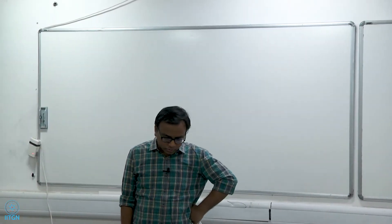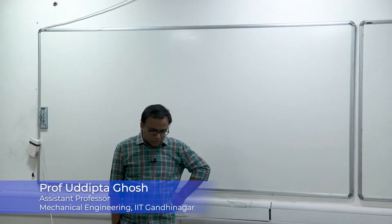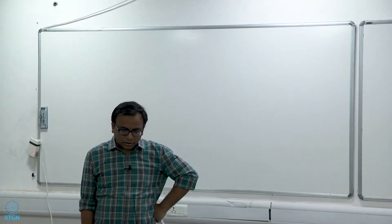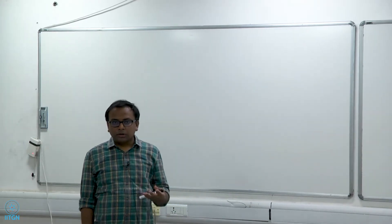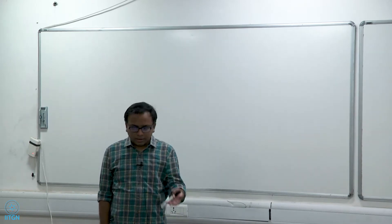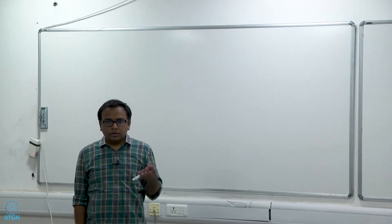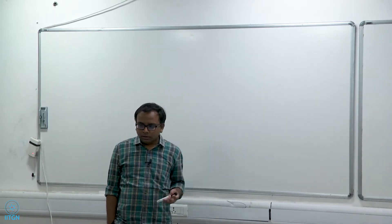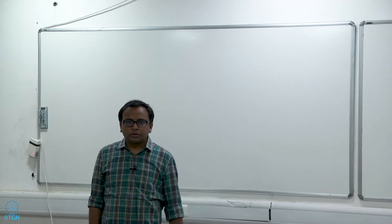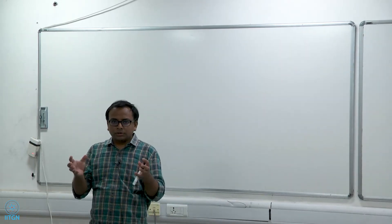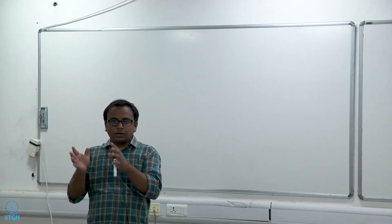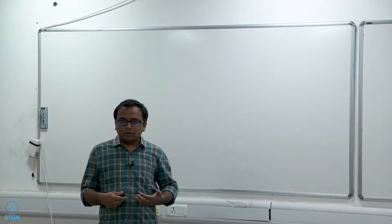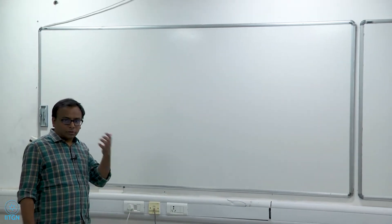Welcome back everybody to the thermodynamics course. We are back after a bit of absence. Before we left, Professor Bhargava had discussed in detail about how entropy changes for a closed system, and we will build upon that today. What we will do is look at what happens if we combine the first and the second law. So far we have only been talking about these two laws separately, but in nature both laws are satisfied together. So let us see what we can get if we apply the first and the second law together.